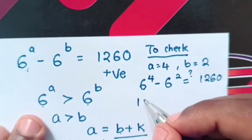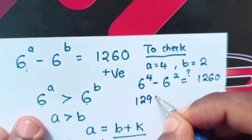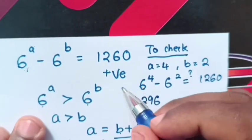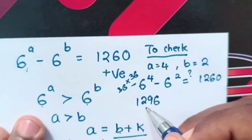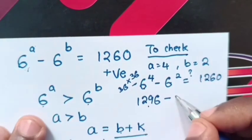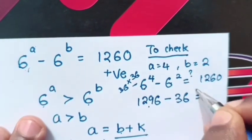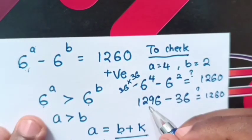Then, 6 power 4 is 1296 because 6 power 4 is 36 times 36. When we multiply, you will get this minus 6 power 2 is 36. Is it equals to 1260?